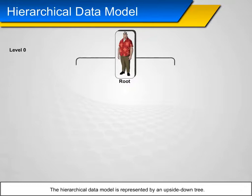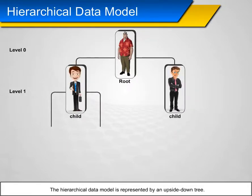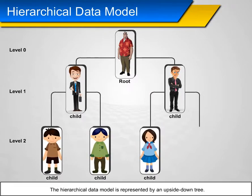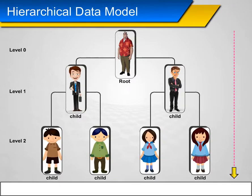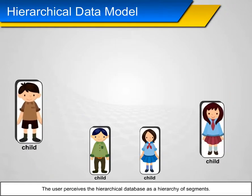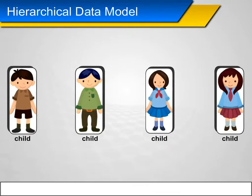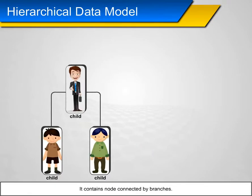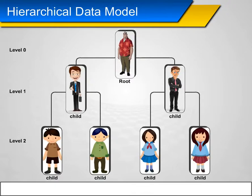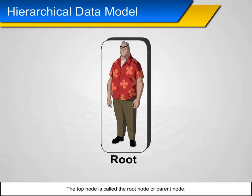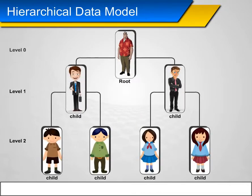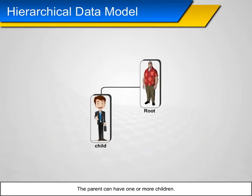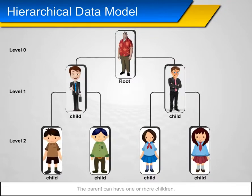The hierarchical data model is represented by an upside-down tree. The user perceives the hierarchical database as a hierarchy of segments — a segment is the equivalent of a file system's record type. It contains nodes connected by branches. The top node is called the root node or parent node. The parent can have no children, one child, or more than one child.